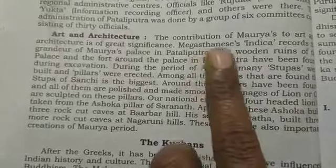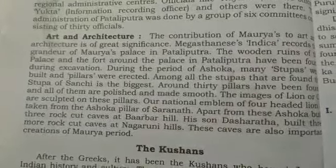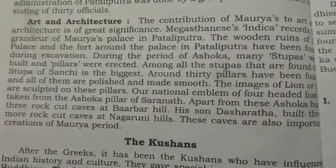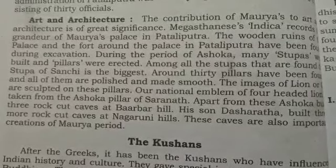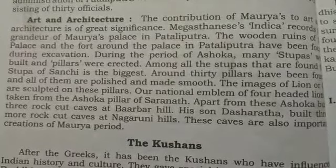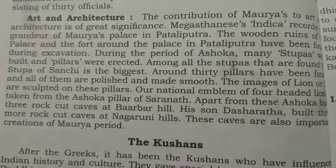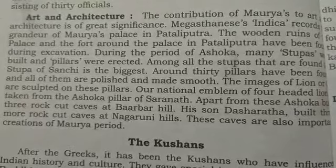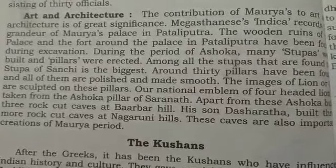Megasthenes' Indica records the great Mauryan palace at Pataliputra. Megasthenes has written about the wooden ruins of the palace found at Pataliputra during excavation. You may remember that it was under Ashoka that a Buddhist council session was also held.